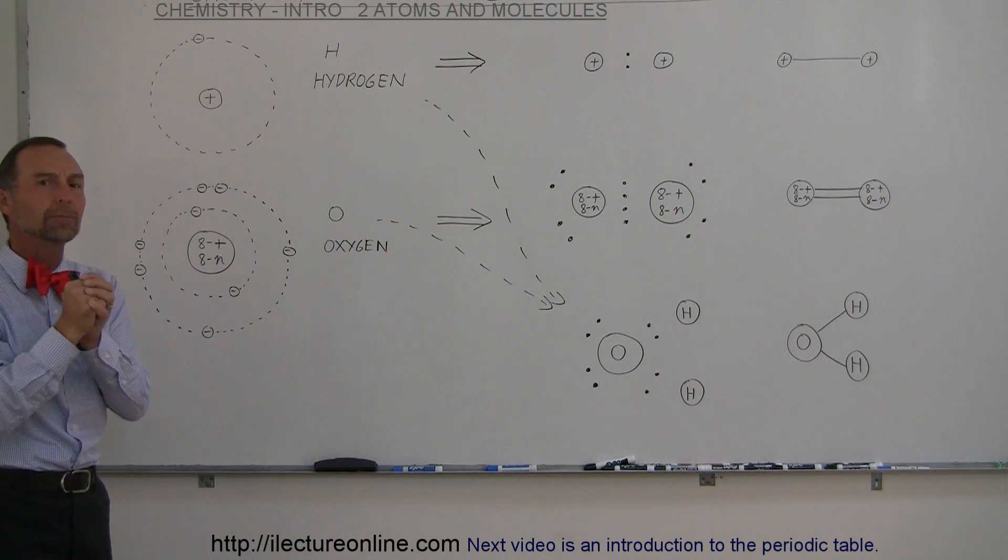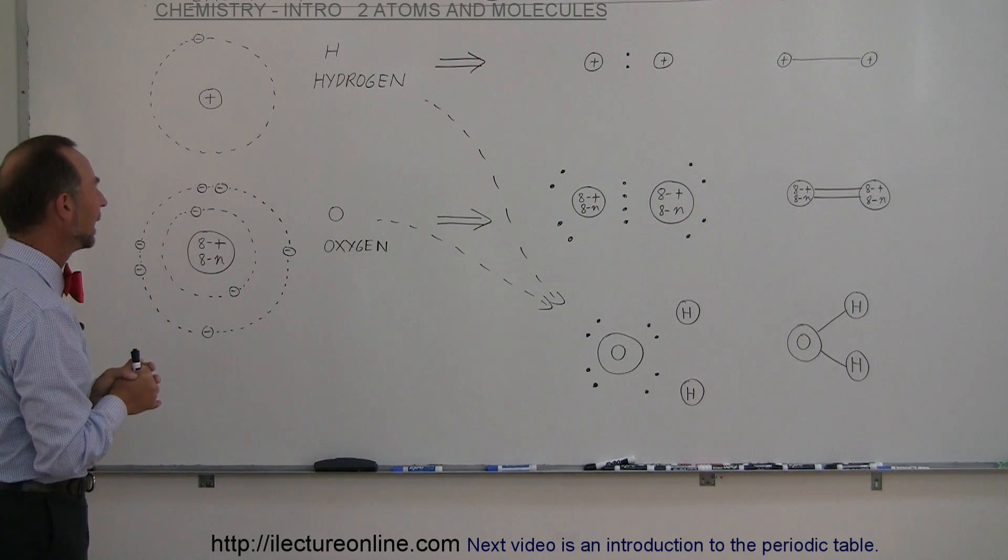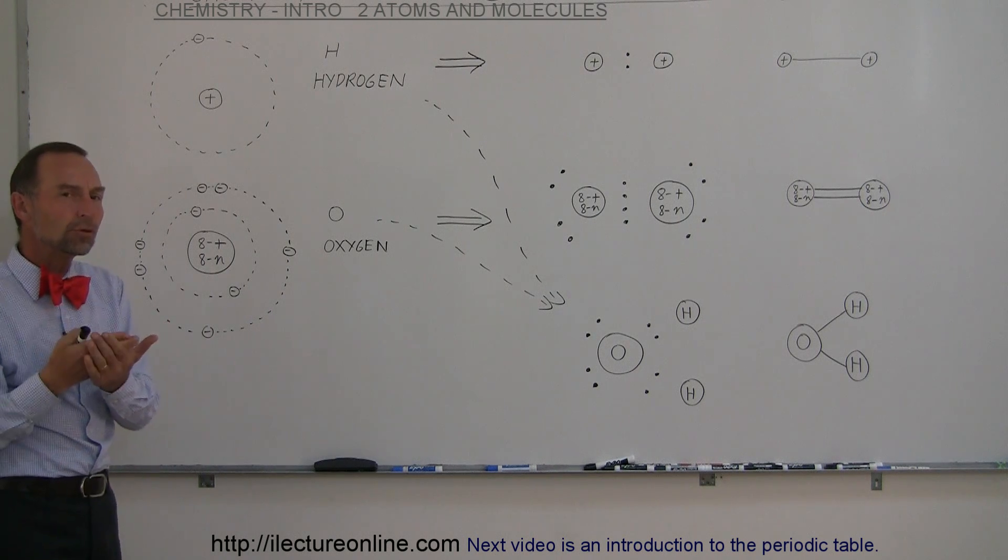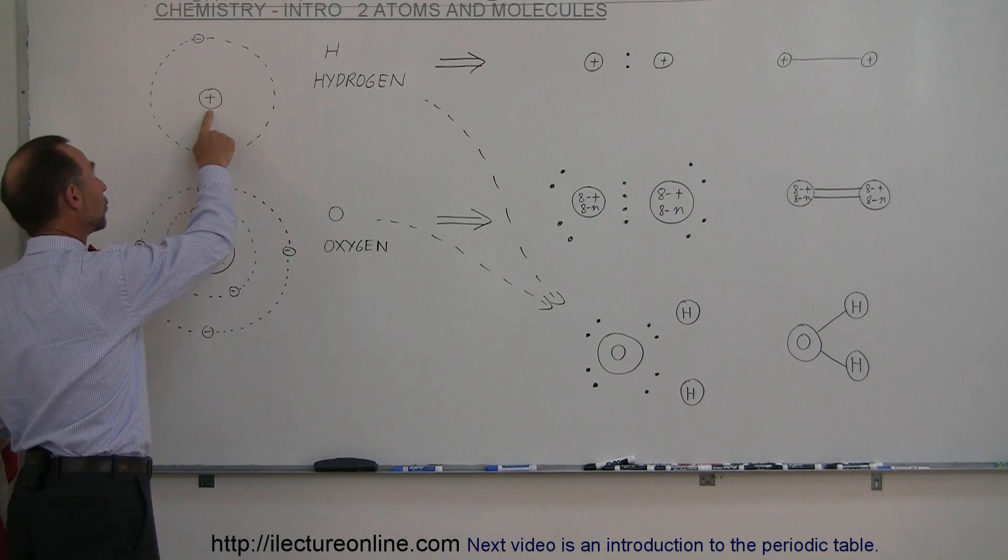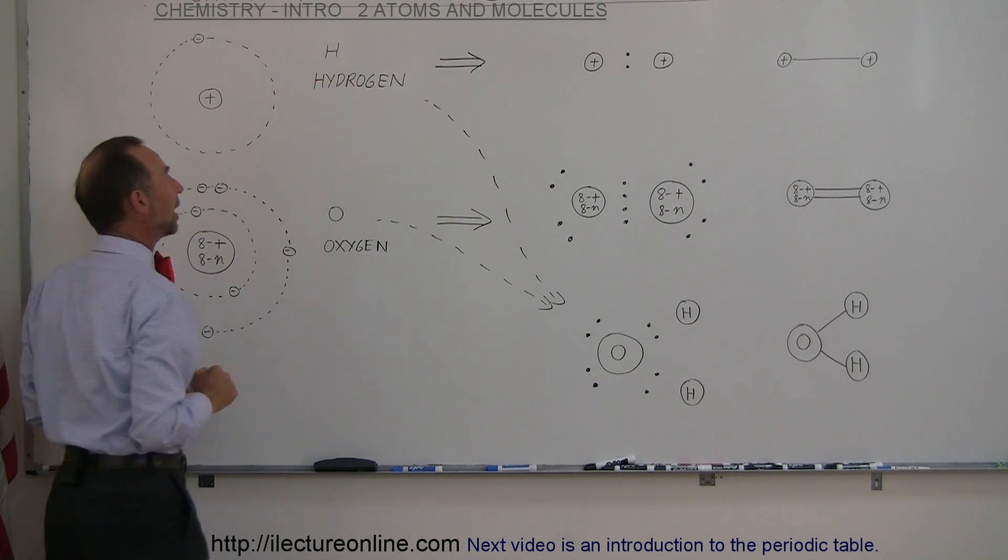Protons and neutrons are the building blocks of the nucleus of an atom. The number of protons determines what type of atom you have. In this case, there's a single proton which makes that atom a hydrogen atom.